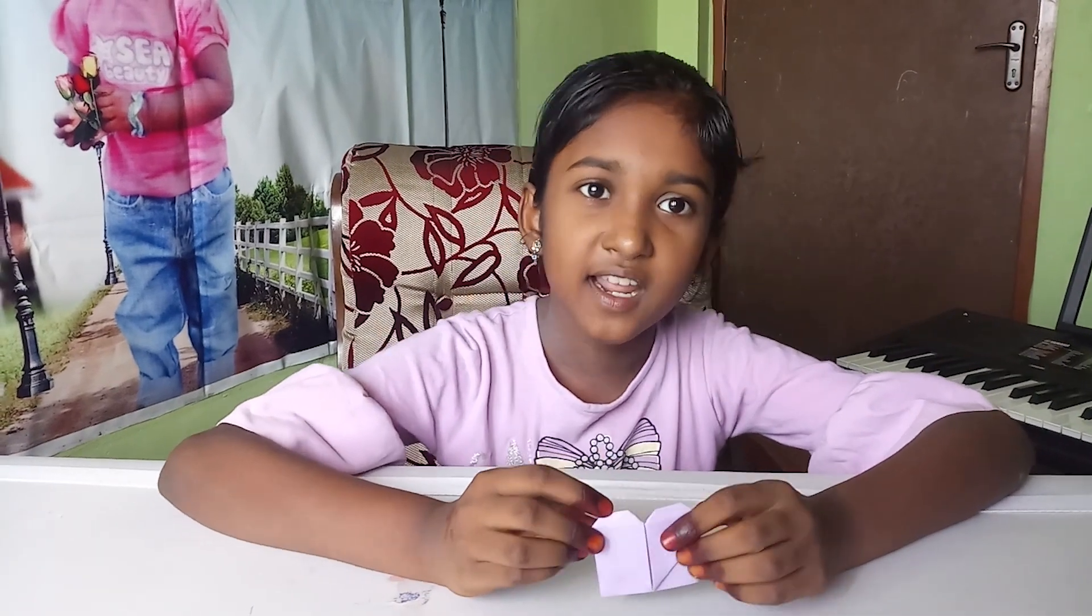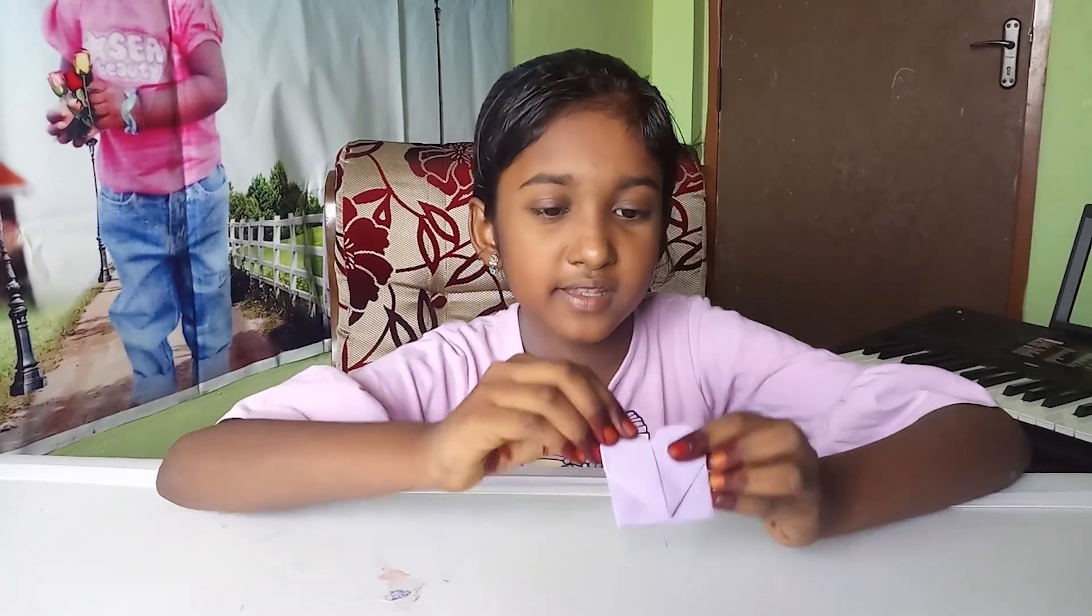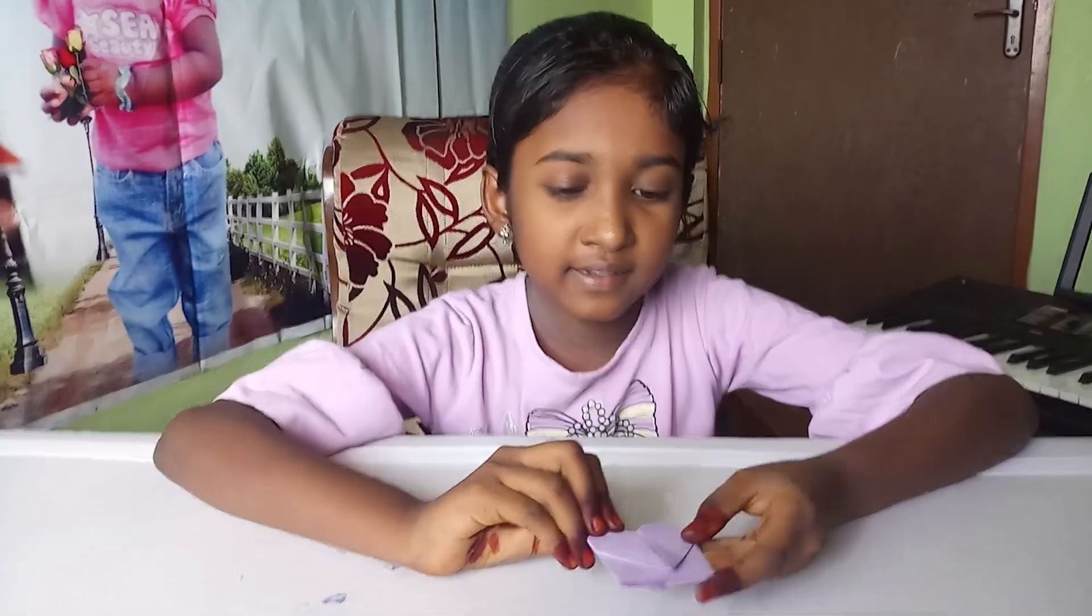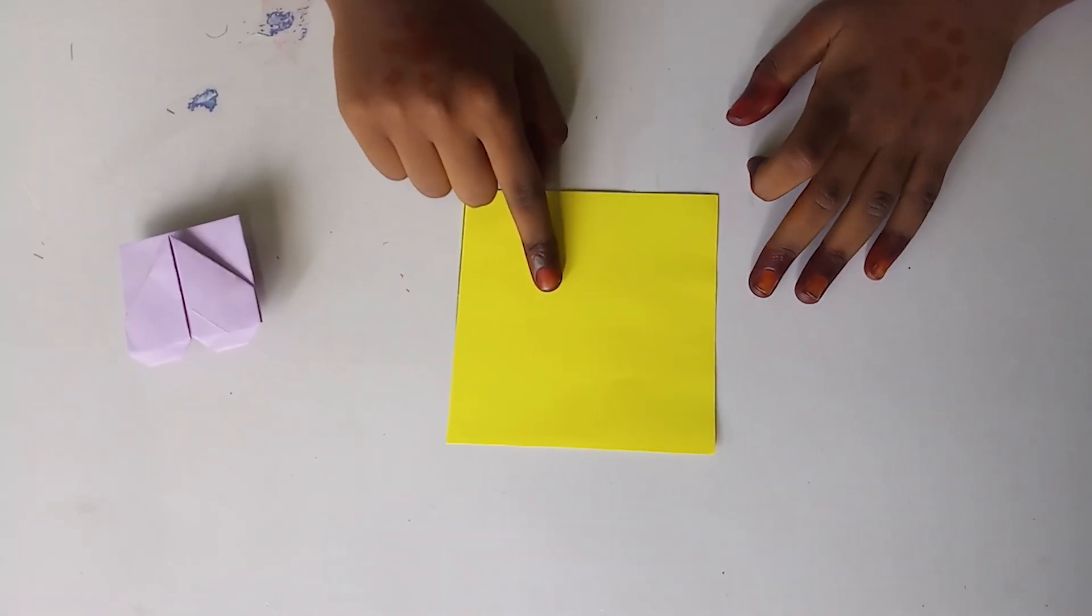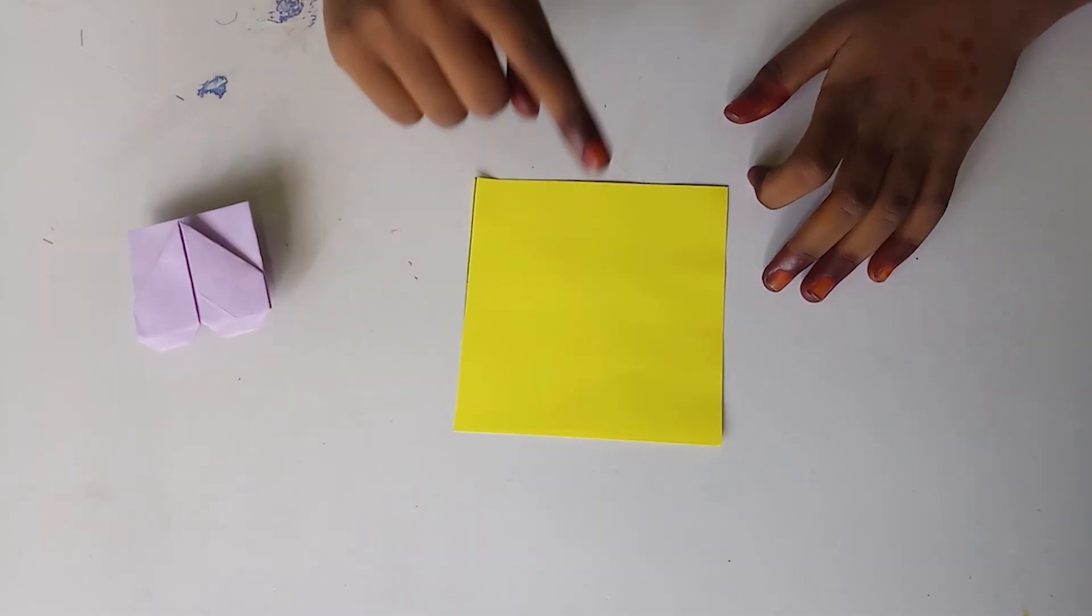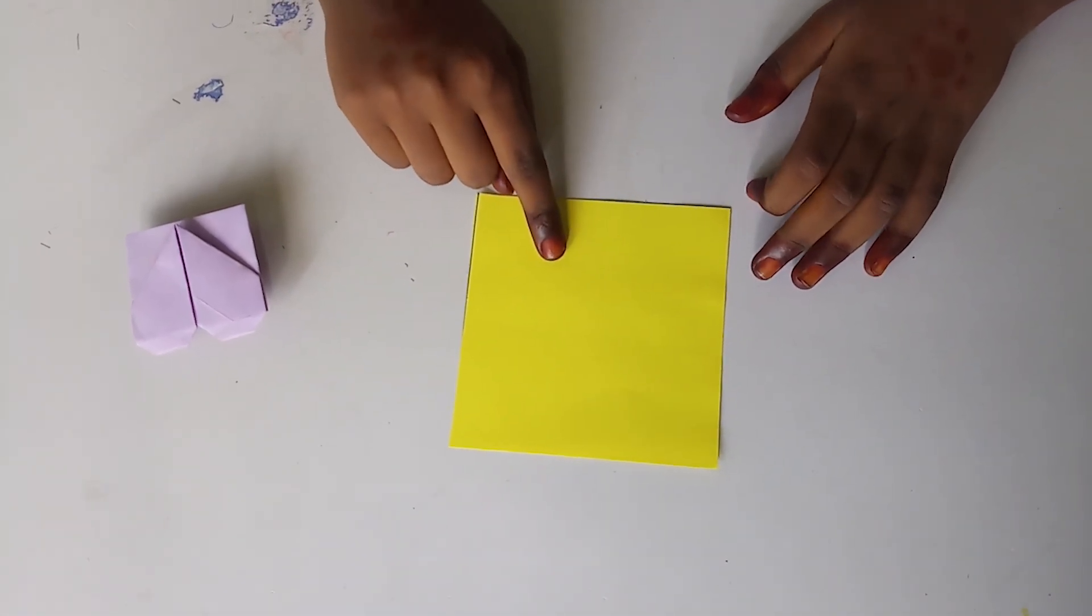Hi friends, welcome to my channel. Today I will show you how to make this heart bookmark. Things needed are a 10cm x 10cm color sheet. It is enough to do this heart bookmark.